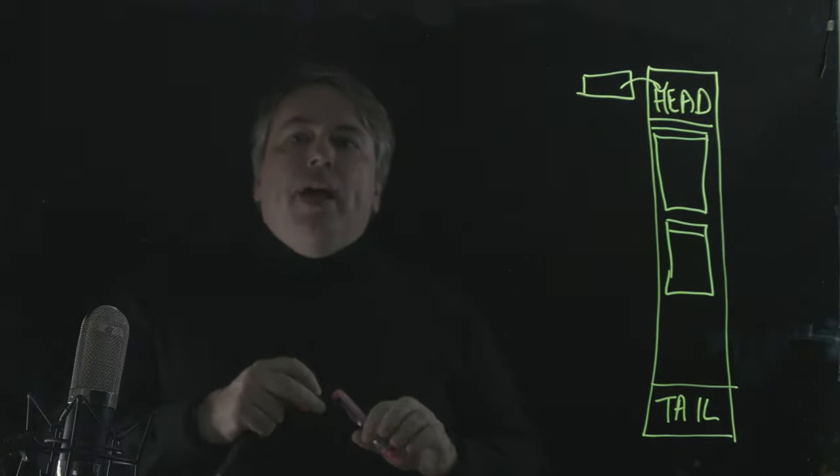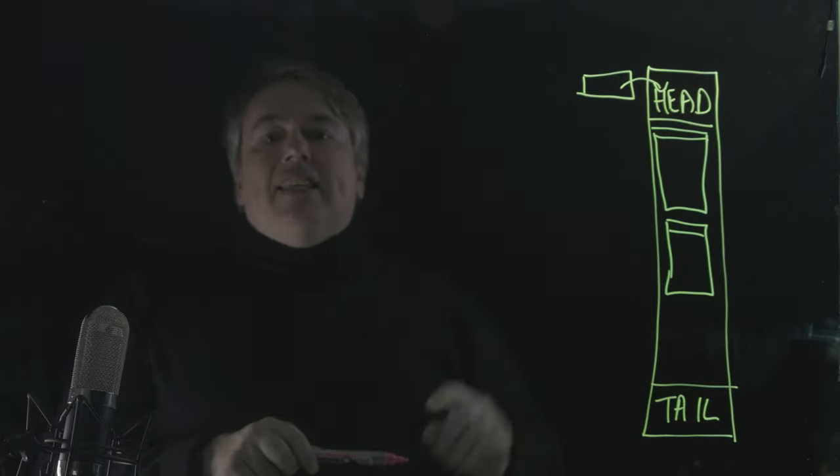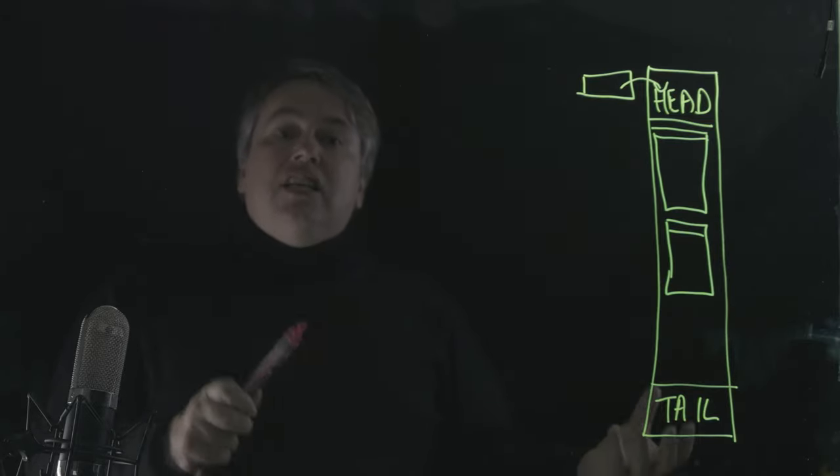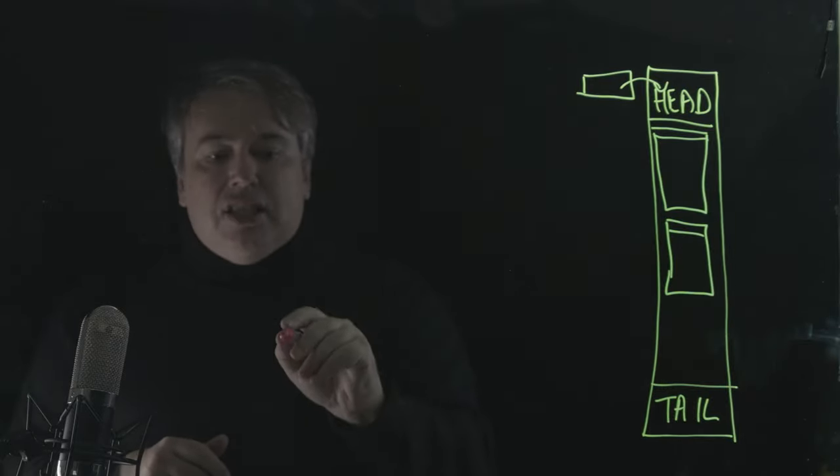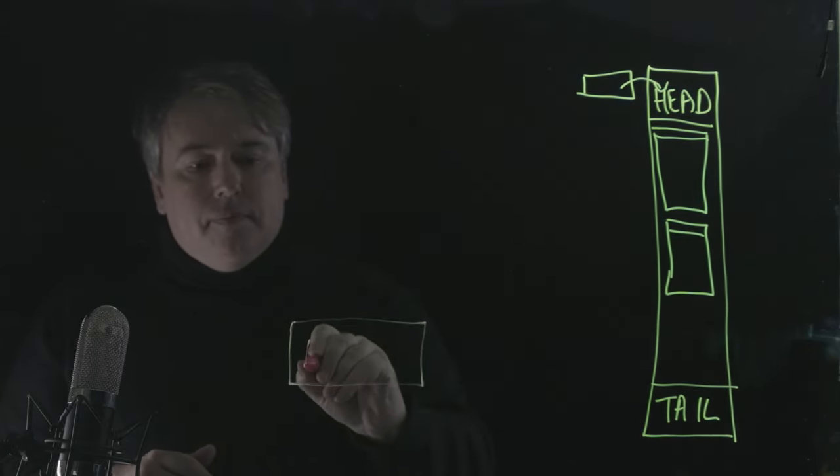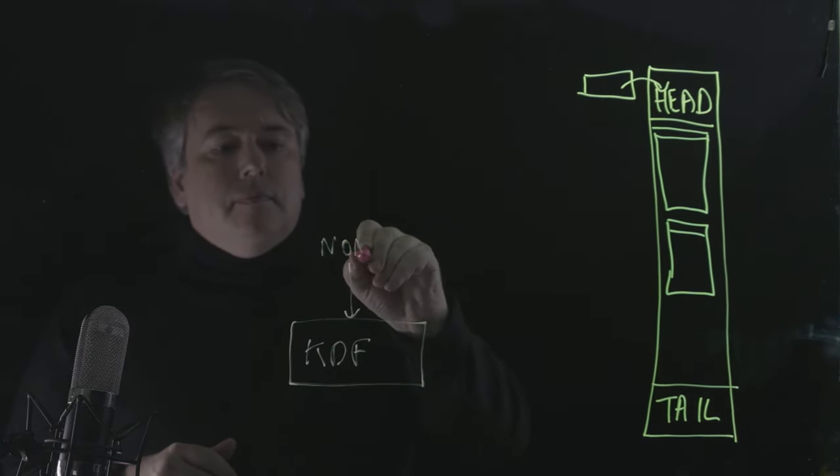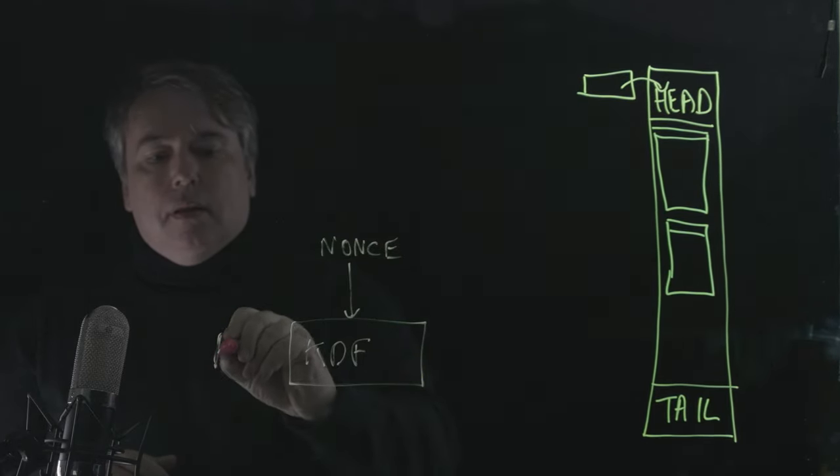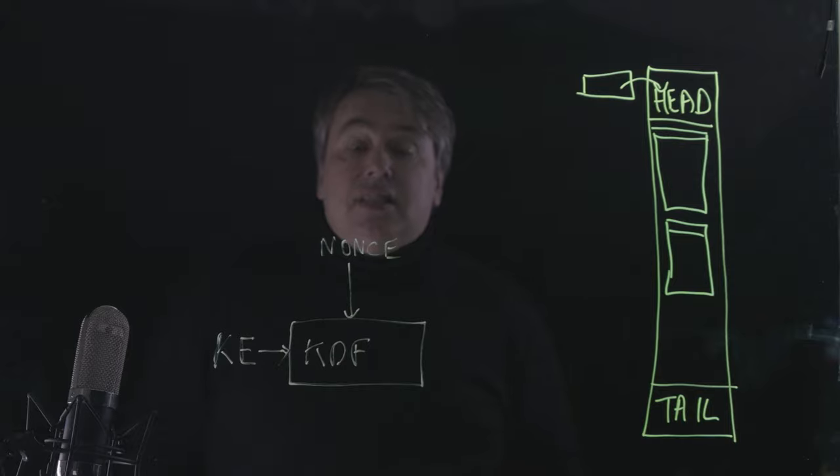And so what we do is that each message head specifies a unique nonce value. So even if we encrypt two pieces of data under the same key exchange, they both have a different nonce. And so the two inputs to our KDF are the nonce value and the key agreement. Or it could just be a symmetric key master secret.